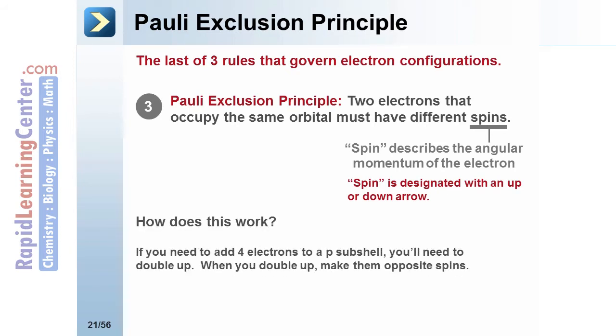If you want to add 4 electrons to p-subshell, you'll need to double up. When you double up, make them opposite spins.